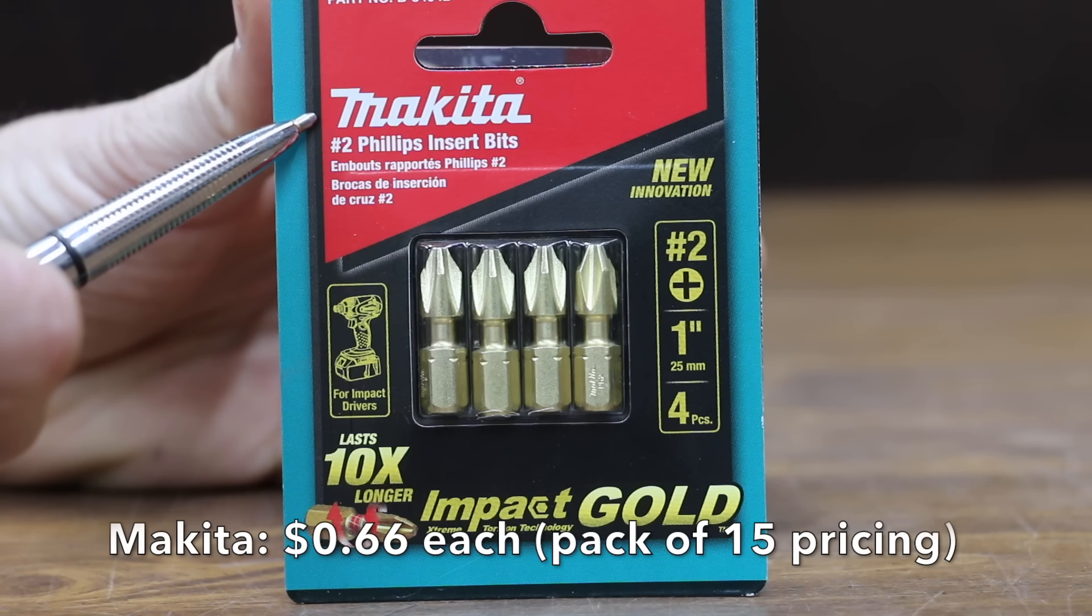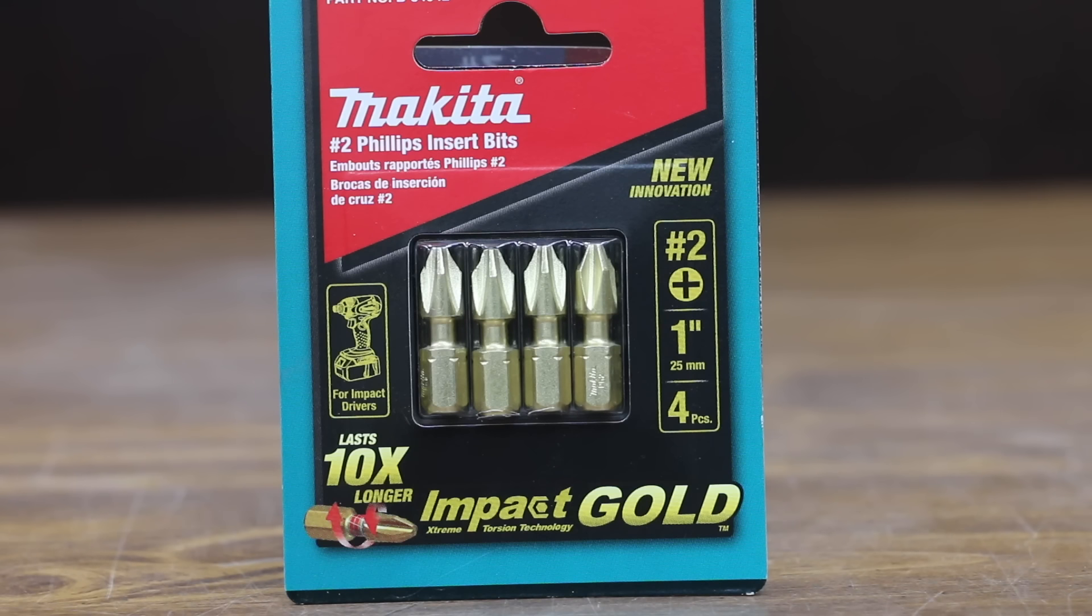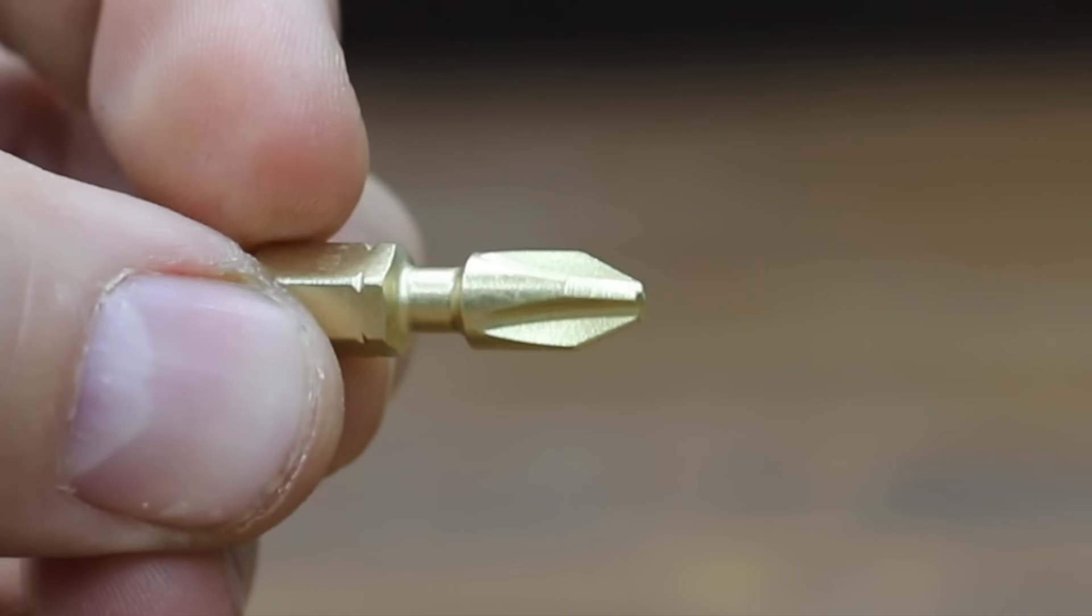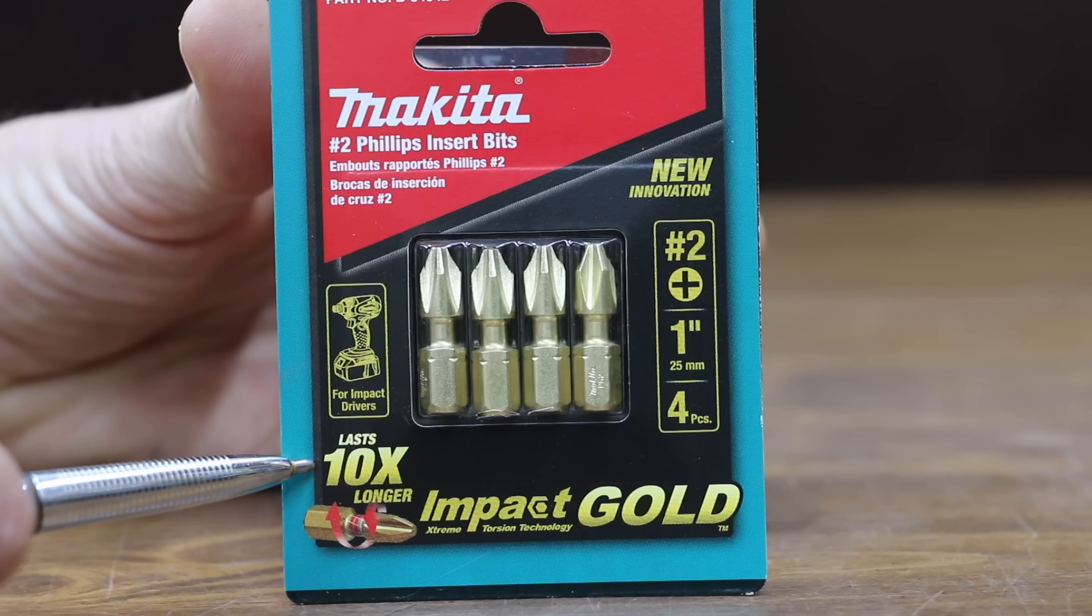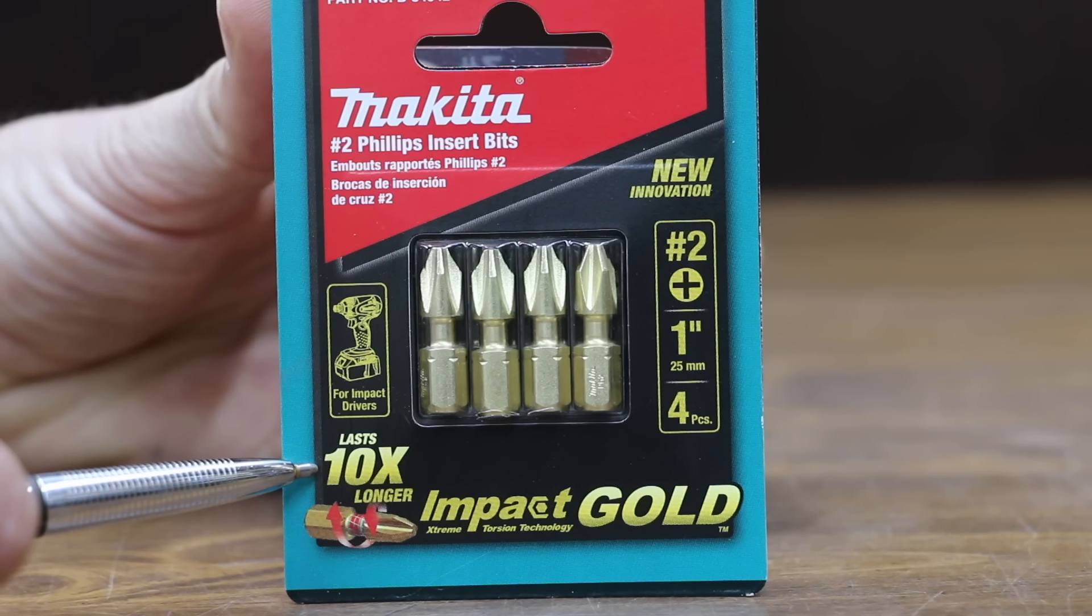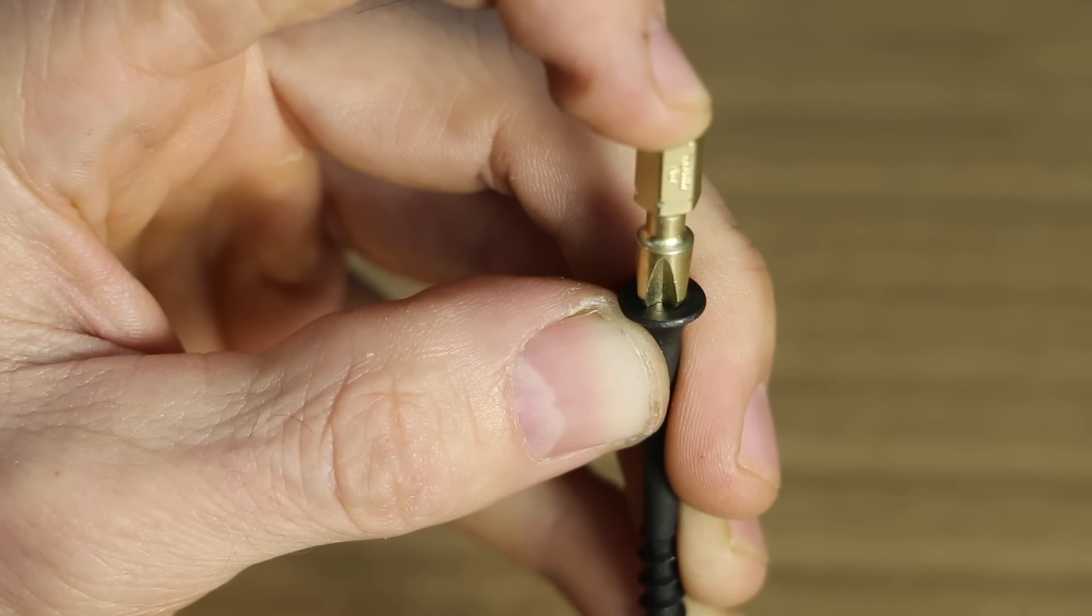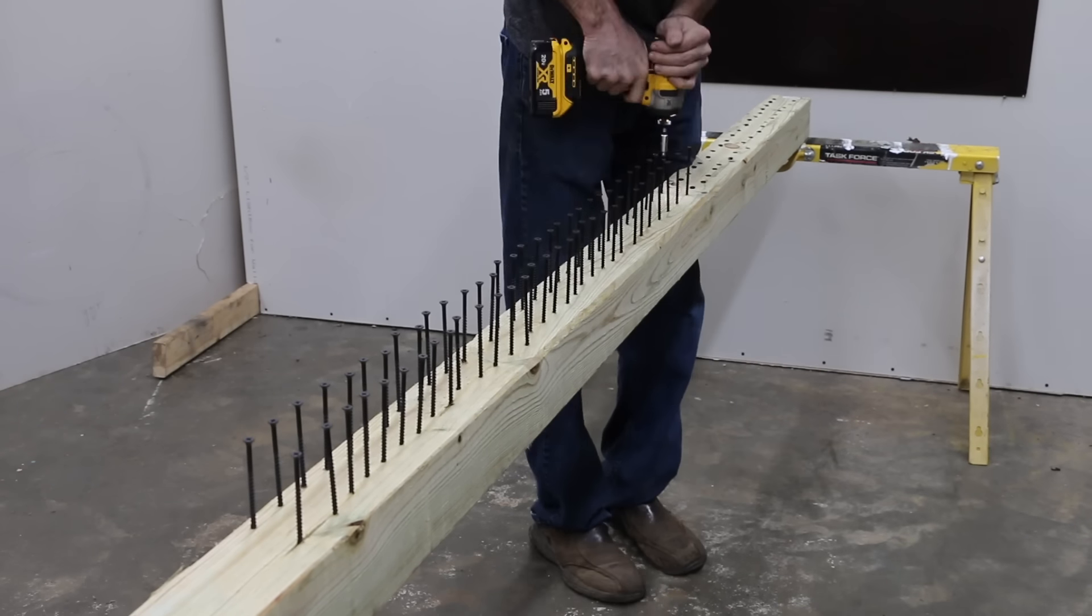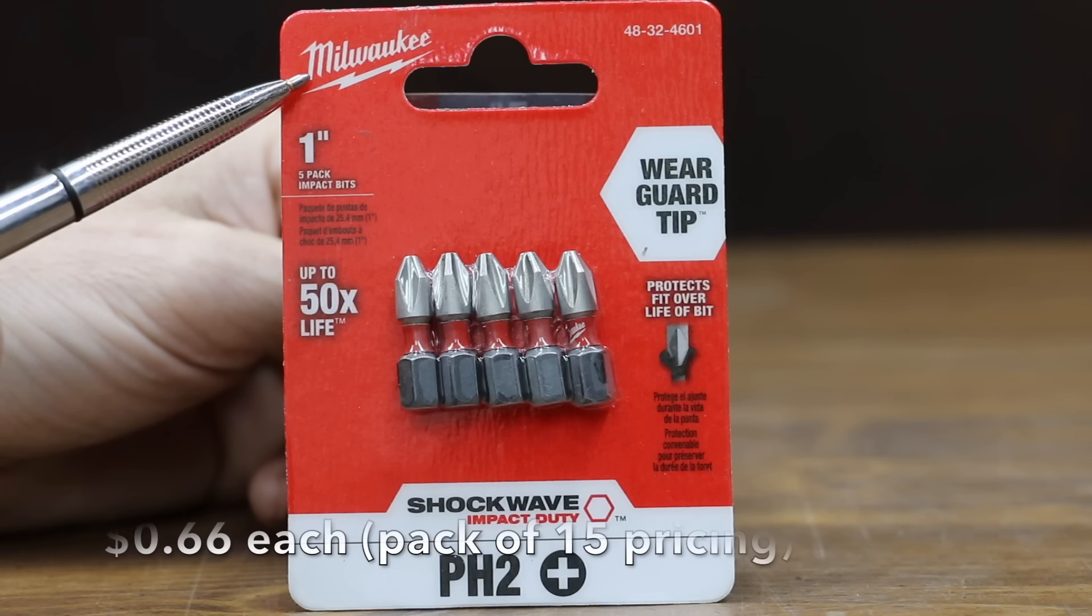Costing 66 cents each, which is 13 cents more per unit than the DeWalt, is this Makita Gold. Designed exclusively for high torque impact drivers. Precision fit tip engineered to prevent cam-out and stripping. Ten times longer life than standard insert bits. Made in Japan. Even though it's a pretty good fit with Makita, there's definitely a little bit more movement than compared to some of the other brands. While Makita did fairly well, it just didn't seem to grip the screws as well as some of the other brands.